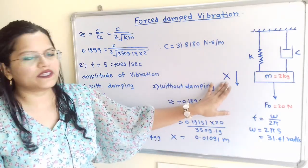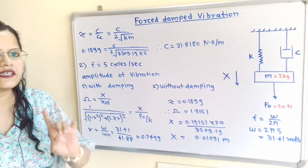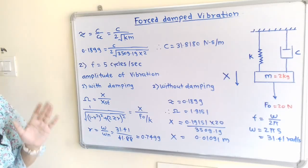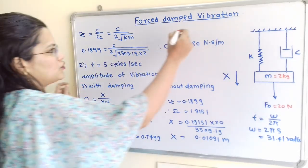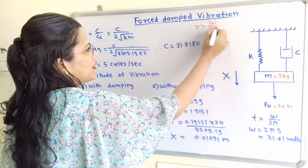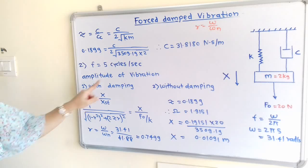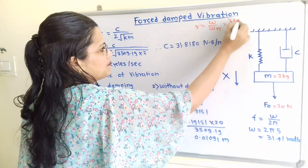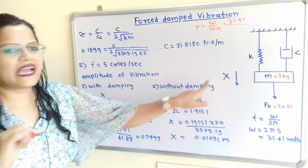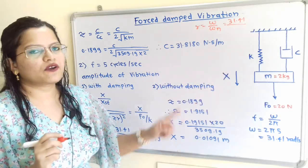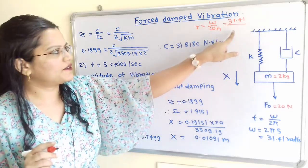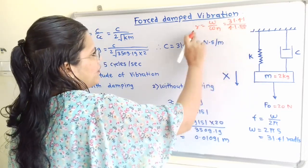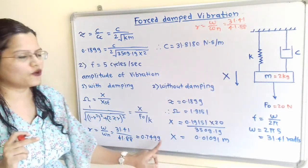In the previous part, due to resonant amplitude, ω/ω_N = 1. But in this case we have to find the value of R = ω/ω_N. This time ω = 31.41 (at F = 5 cycles per second), and ω_N = 41.88 (resonant frequency equals natural frequency). So R = 31.41/41.88 = 0.7499.